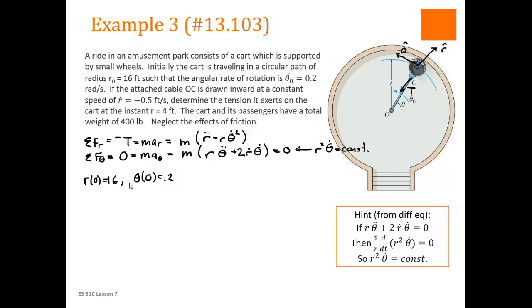We're also told that r dot is negative 0.5. And it's a constant. So r double dot is equal to zero. And we know our mass. Our mass is given as a weight. So our mass is 400 divided by 32.2.